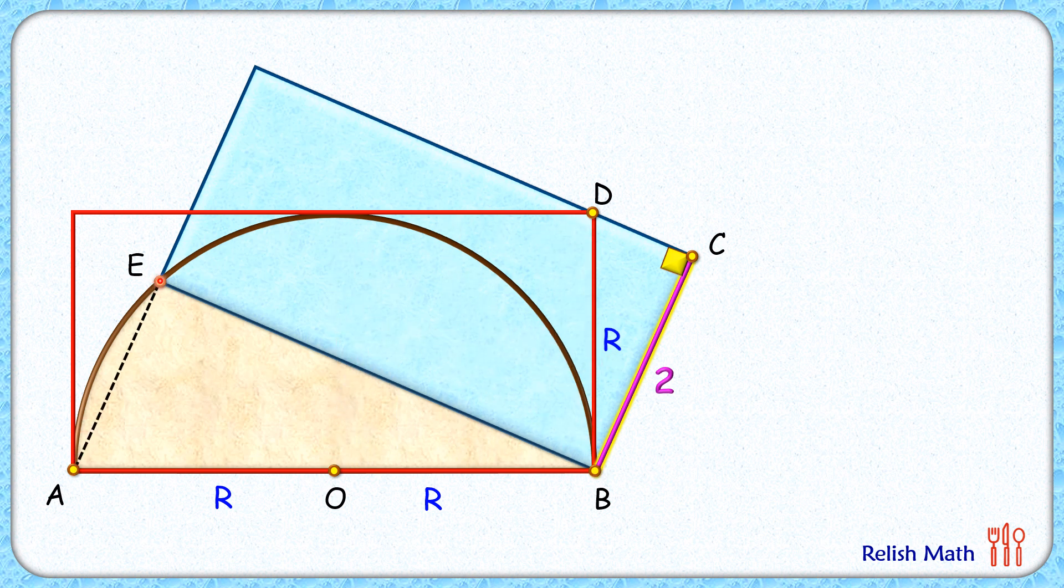Let's join AE here. Now this angle E is the angle subtended by the diameter on the circumference and thus by theorem it will be 90 degrees.